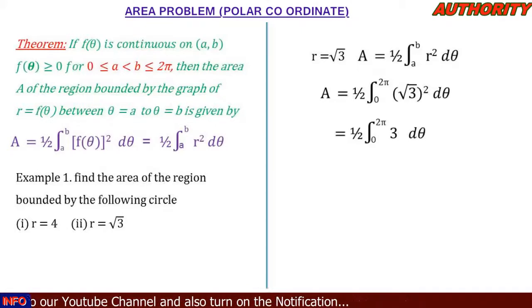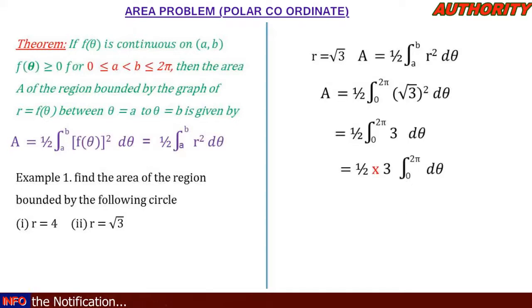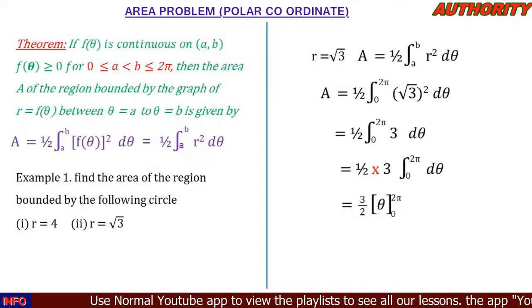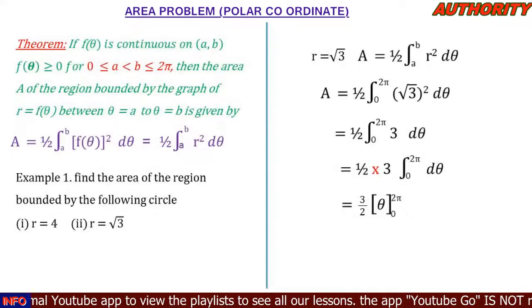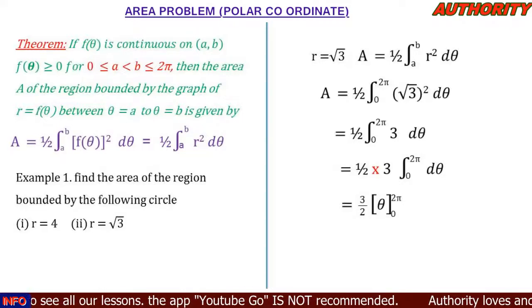So we have one-half times the integral from 0 to 2pi of 3 d-theta. We can take 3 outside the integral sign to multiply one-half, giving us one-half times 3, times the integral from 0 to 2pi d-theta. One-half times 3 is 3 over 2, so we have 3 over 2 times the integral from 0 to 2pi d-theta. Integrating gives us 3 over 2 times [theta] evaluated from 0 to 2pi. Substituting: 3 over 2 times (2pi minus 0).